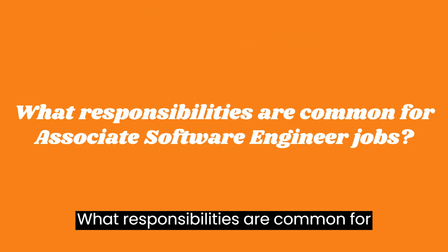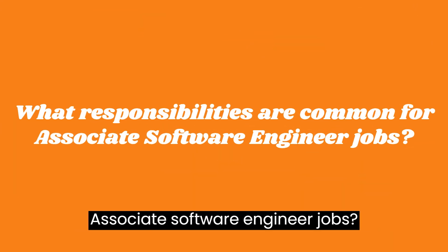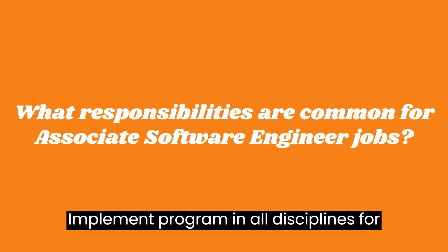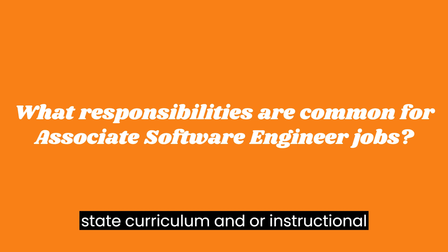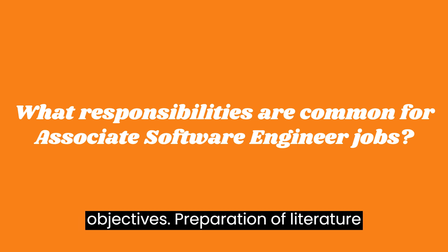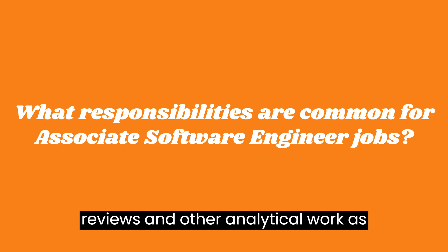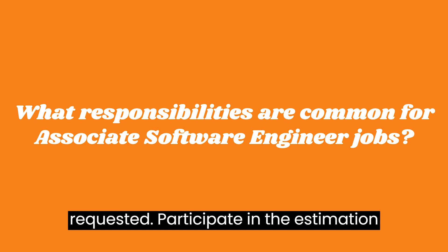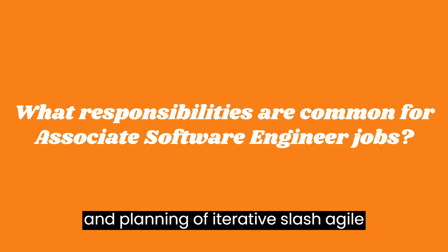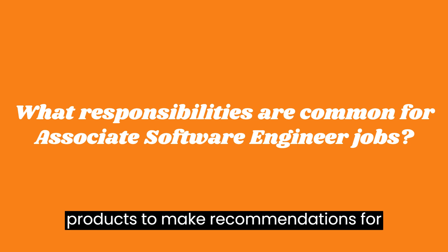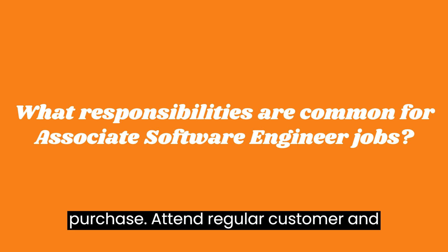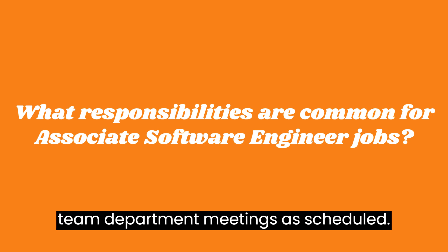What responsibilities are common for associate software engineer jobs? Implement programs in all disciplines for the purpose of conforming to district and state curriculum or instructional objectives. Preparation of literature reviews and other analytical work as requested. Participate in the estimation and planning of iterative/agile releases. Help to evaluate vendor products to make recommendations for purchase. Attend regular customer and team department meetings as scheduled.